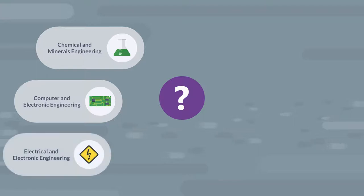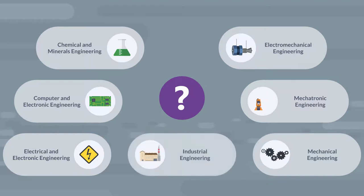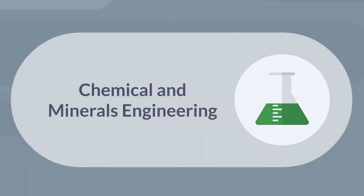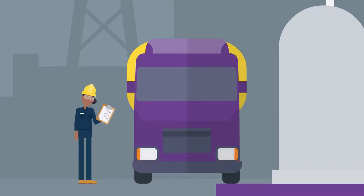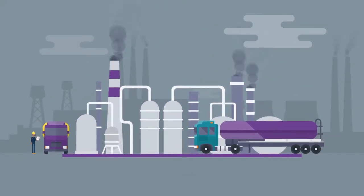Chemical and Minerals Engineering, Computer and Electronic Engineering, Electrical and Electronic Engineering, Electromechanical Engineering, Mechatronic Engineering, Mechanical Engineering, Industrial Engineering. A chemical and minerals engineer is someone who is trained to develop, design and manage industrial processes where raw materials are converted to products with higher economic value.